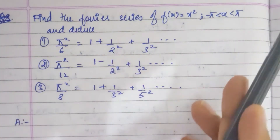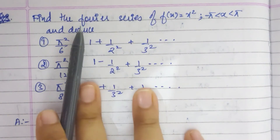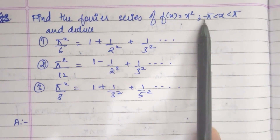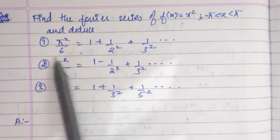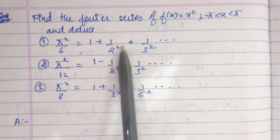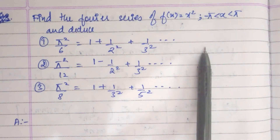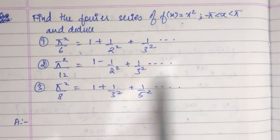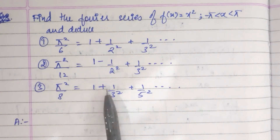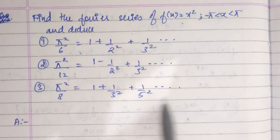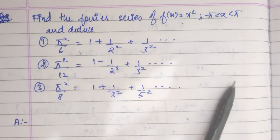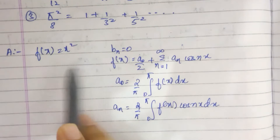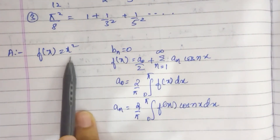Let's take the next question under even and odd functions. Find the Fourier series of f of x equals x squared for x between minus pi and pi. Deduce that pi squared by 6 equals 1 plus 1 by 2 squared plus 1 by 3 squared and so on; pi squared by 12 equals 1 minus 1 by 2 squared plus 1 by 3 squared and so on; and pi squared by 8 equals 1 plus 1 by 3 squared plus 1 by 5 squared and so on. This is a very important type of question, so please pay attention.